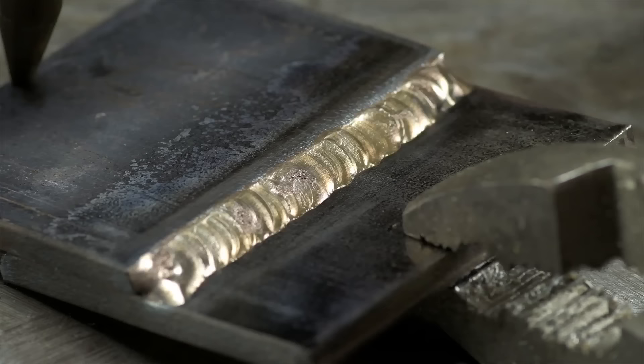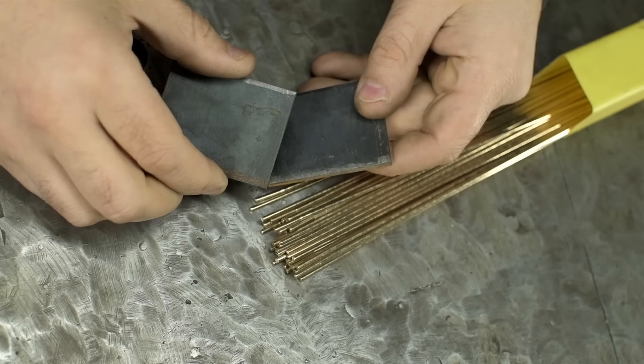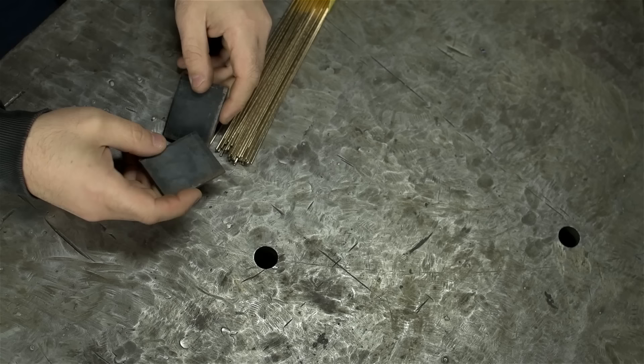TIG brazing is a way of joining metals without technically welding them. In theory, you never melt the base metal, so it's not welding.